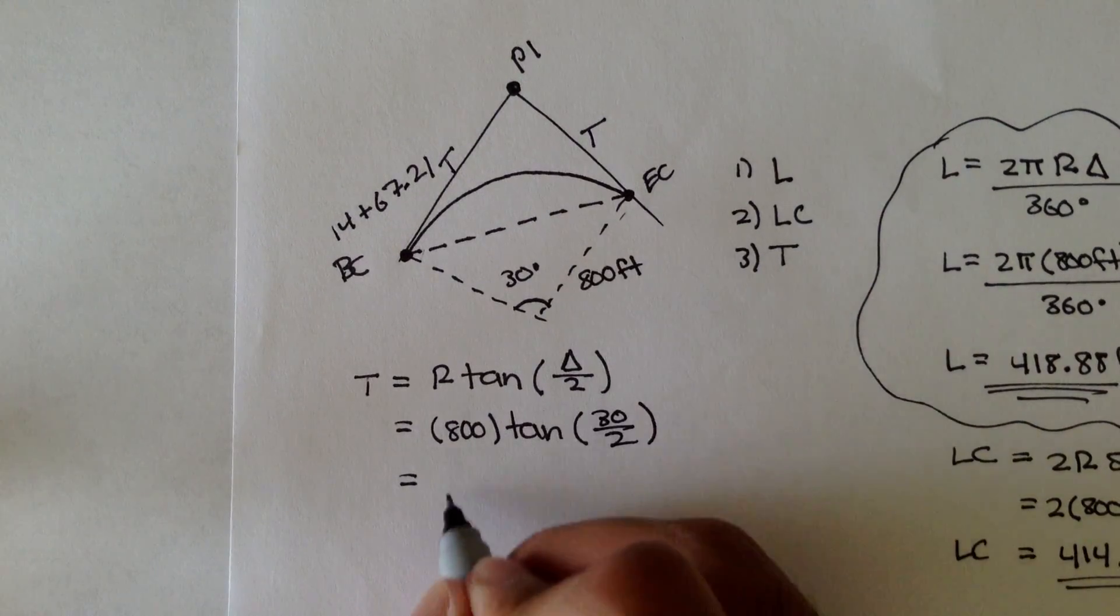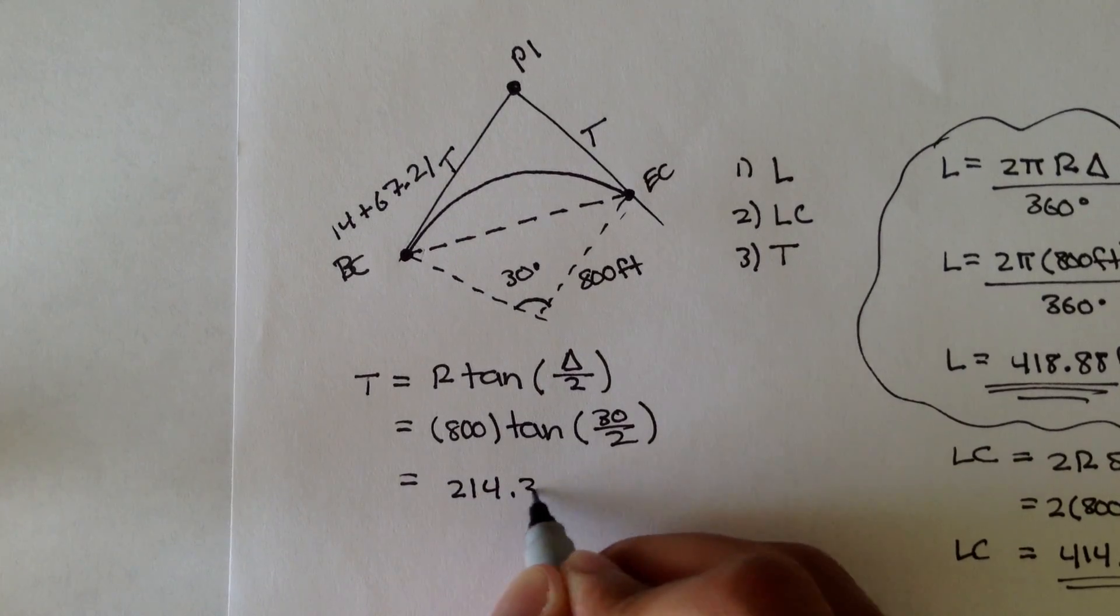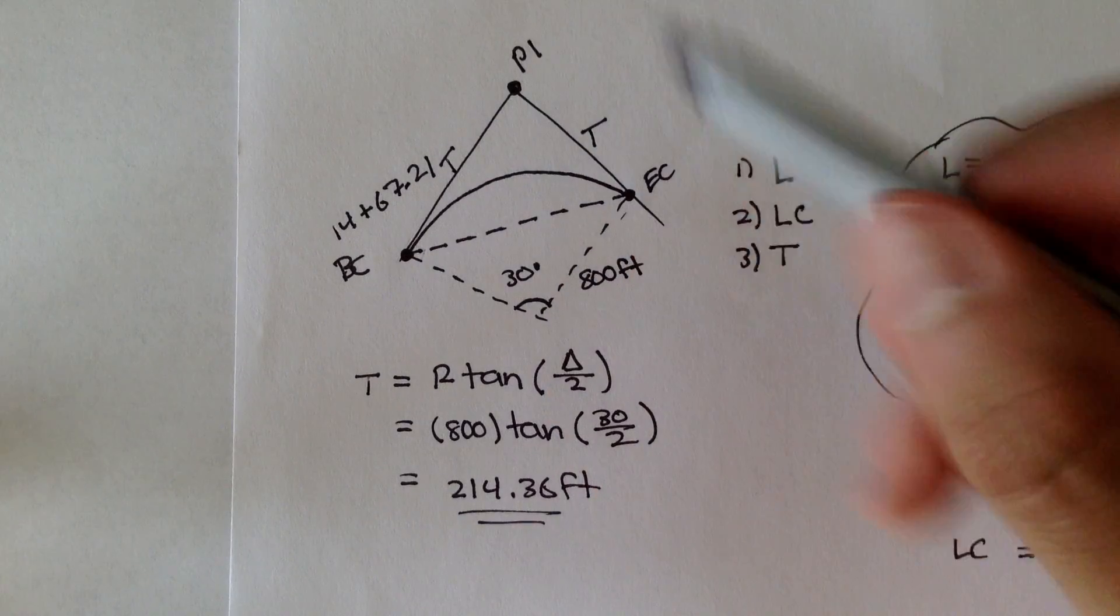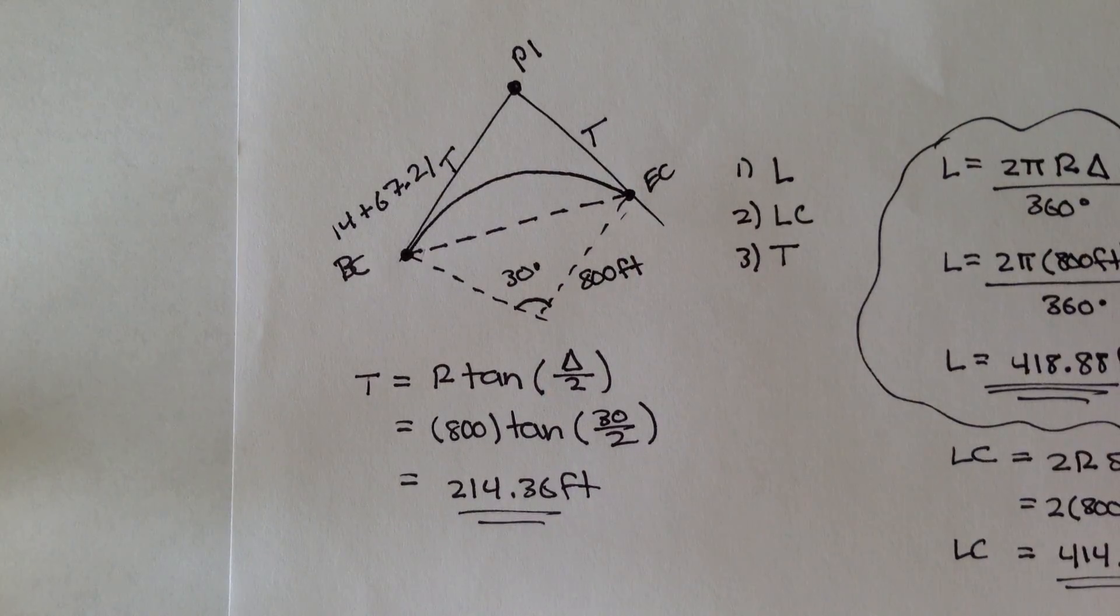And if we solve all this out, we get 214.36 feet. So this says that the distance from the BC to the PI, or from the EC to the PI, is 214.36 feet.